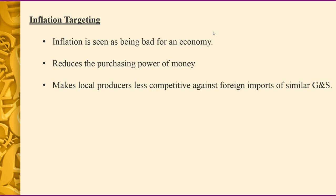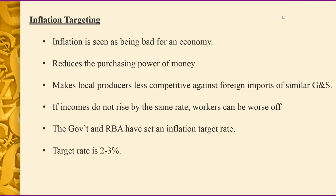We have inflation targeting. Inflation is seen as being bad for an economy, though it does show the economy is growing. It reduces the purchasing power of money — if a packet of chips costs $1 this year, but with inflation it's $1.20 next year and you're still earning the same dollar, you've lost purchasing power. It also makes local producers less competitive. If incomes do not rise by the same rate, workers can be worse off. The government and the RBA have set an inflation target of 2% to 3%. For example, if the government offers pay rises of 2% but inflation is 3%, you're actually losing 1% in purchasing power.